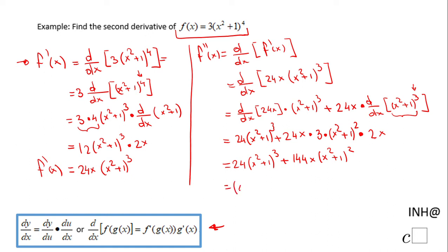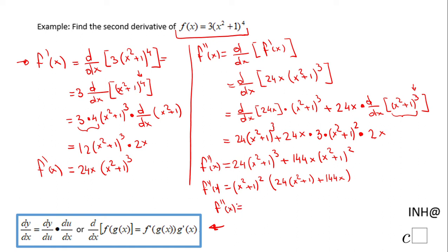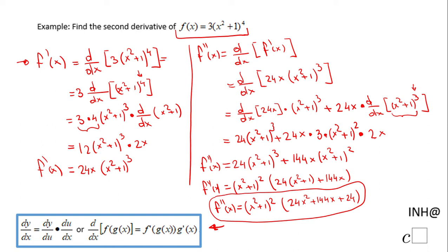This is a good answer, but we can factor out x squared plus 1 to the 2nd power. That gives us 24 times x squared plus 1 — since we removed two of those factors — plus 144x. So the factored form is x squared plus 1 squared, times the quantity 24x squared plus 144x plus 24. You may want to check if the last part factors further, but this is the second derivative of our function.